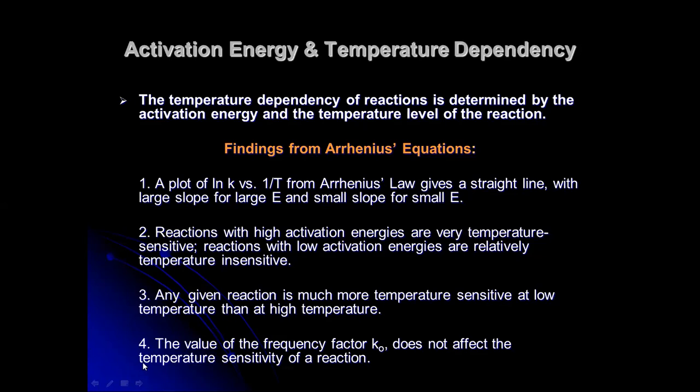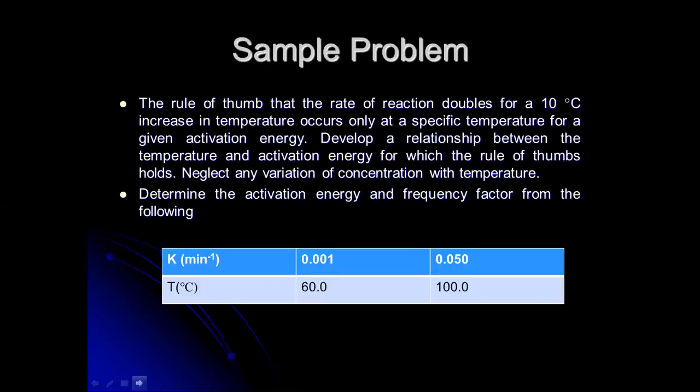So these are the things that we can deduce from the relationship of ln of k and one over T, or we can take from the Arrhenius equation. Now you have a sample problem here, and this will use the formula or the ratio that they have asked you, the relationships a while ago.